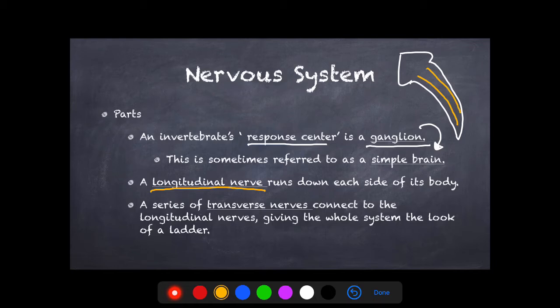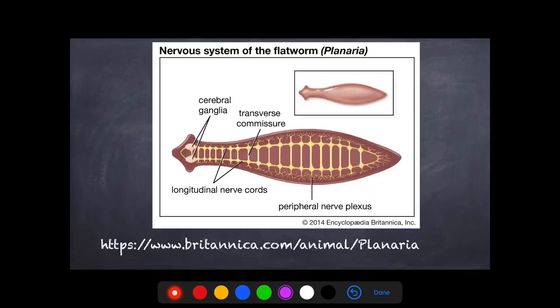They also have a series of transverse nerves that connect to the longitudinal nerves, and together these make the inside nervous system of the planarian look like a ladder. So to recap: they have a ganglion as their response center, longitudinal nerves running down each side, and transverse nerves connecting across — giving that ladder appearance.